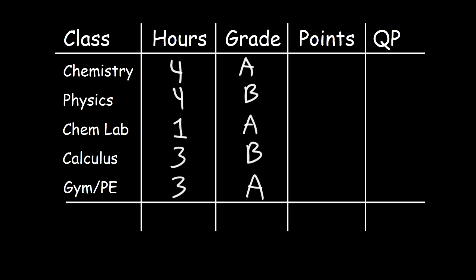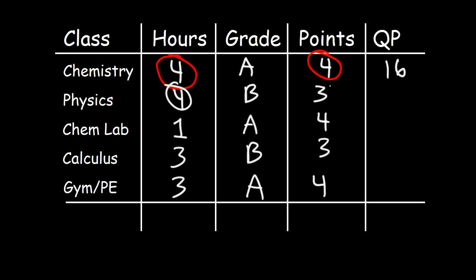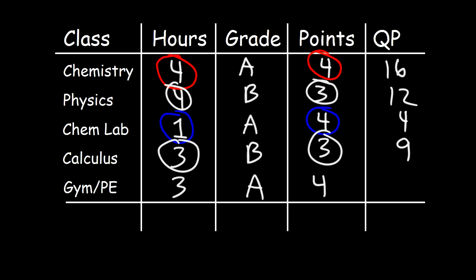Feel free to pause the video and try this example. First, determine the points for each letter grade: an A is worth four points and a B is worth three points. Now multiply the credit hours by the points: four times four is 16, four times three is 12, one times four is four, three times three is nine, and three times four is 12.